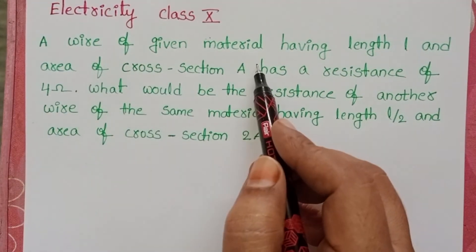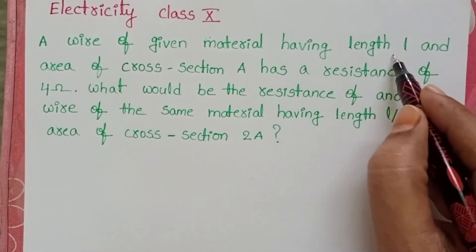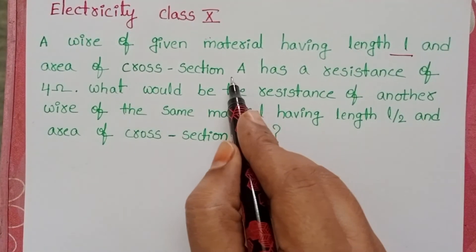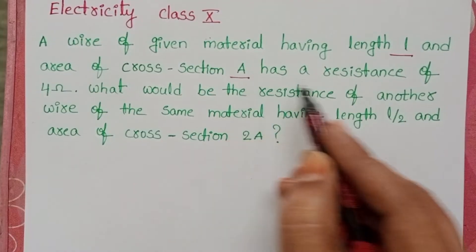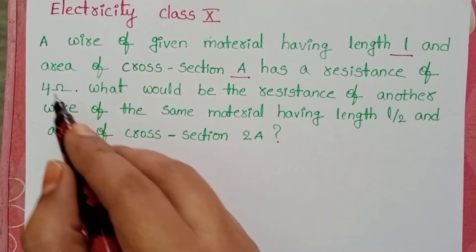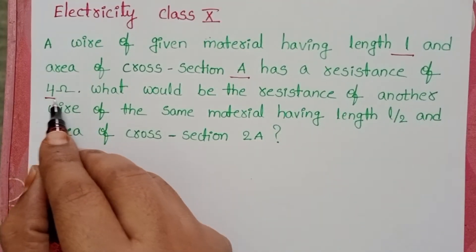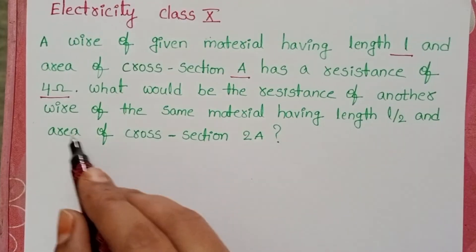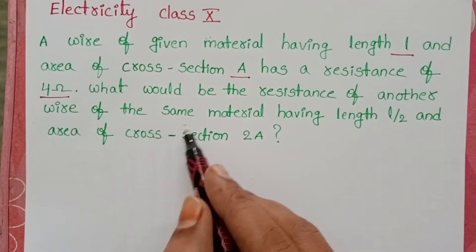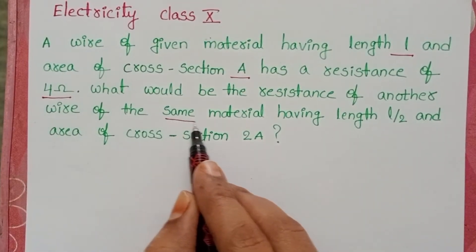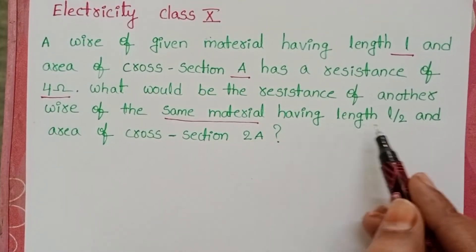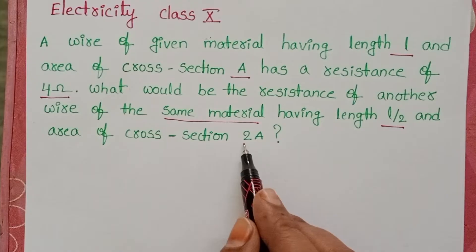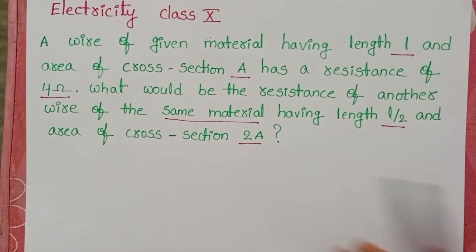A wire of given material having length L and area of cross section A has a resistance of 4 ohm. What would be the resistance of another wire of the same material having length L/2 and area of cross section 2A?